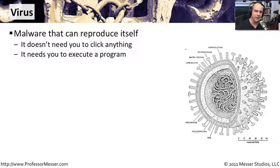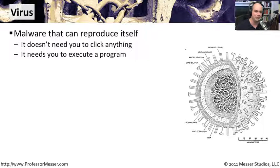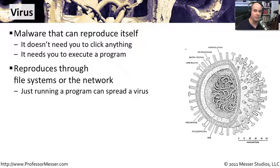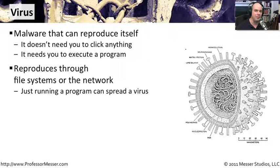Once that virus gets started with that executable, it can then transfer itself to other things in your computer and to your USB drive. It can transfer across the network to wherever that executable is that you're running on a separate hard drive. So it can go through all of your file systems and through the network. This can be a very big problem if you have a lot of different file systems and a big network at work.